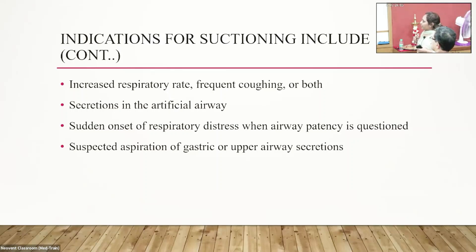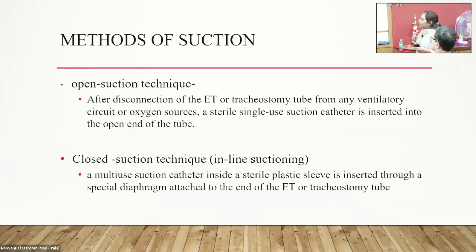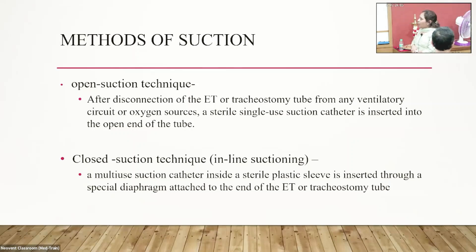Suspected aspiration of gastric or upper airway secretions is also an indication. There are different methods of suctioning. Most of the time we use the open suction technique, where after disconnection of the ET or tracheostomy tube from the ventilator circuit or oxygen source, a sterile single-use catheter is introduced. The closed suction technique is in-line suctioning where the airway does not disconnect from the ventilator.